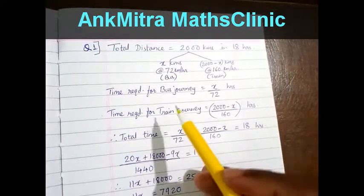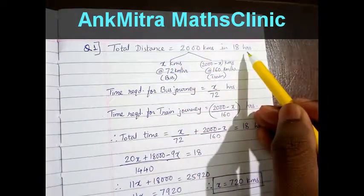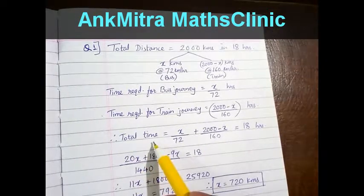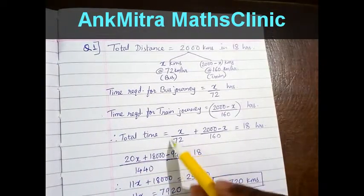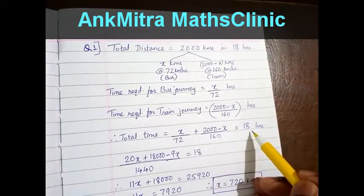They have mentioned that the total distance was covered in 18 hours. So we will use this to form an equation. Total time is equal to x divided by 72 plus train journey time, which equals 18.